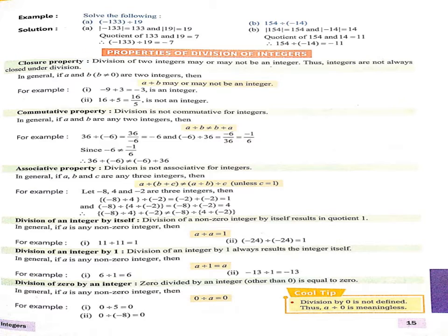यहाँ पर बेटा हमें यह समझाया गया है कि अगर हमारा एक integer positive है और दूसरा negative है तो हमारा जो quotient आएगा वो हमेशा negative sign में ही आएगा। Now we start properties — properties of division of integers. Closure property: division of two integers may or may not be an integer. Thus, integers are not always closed under division.